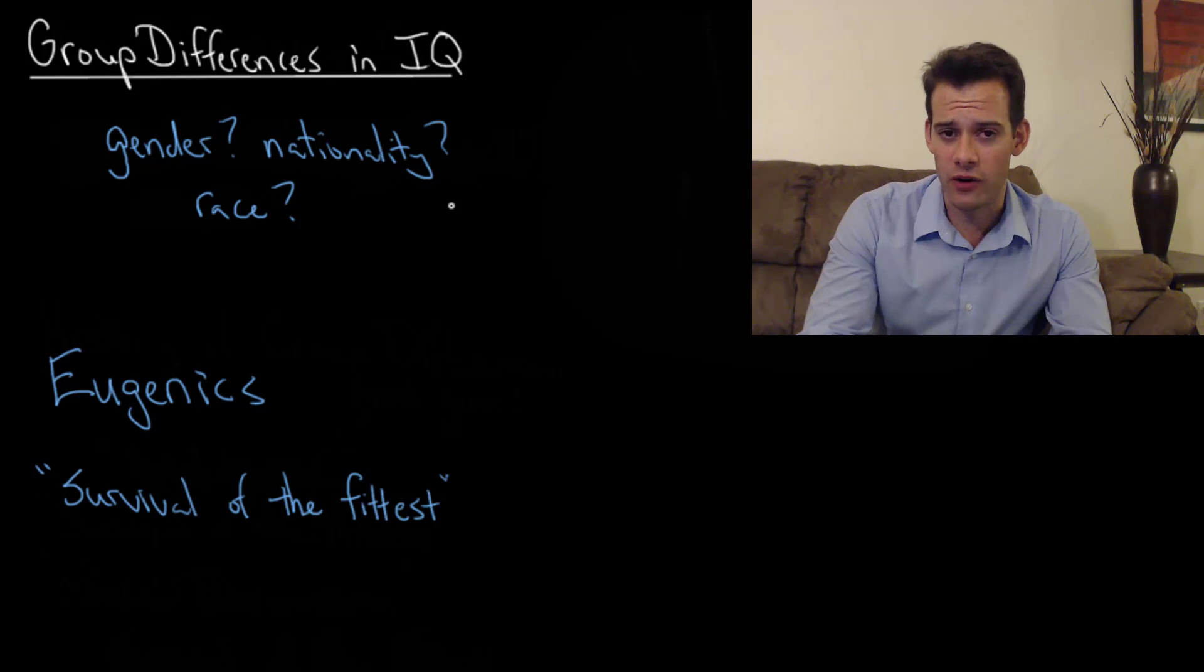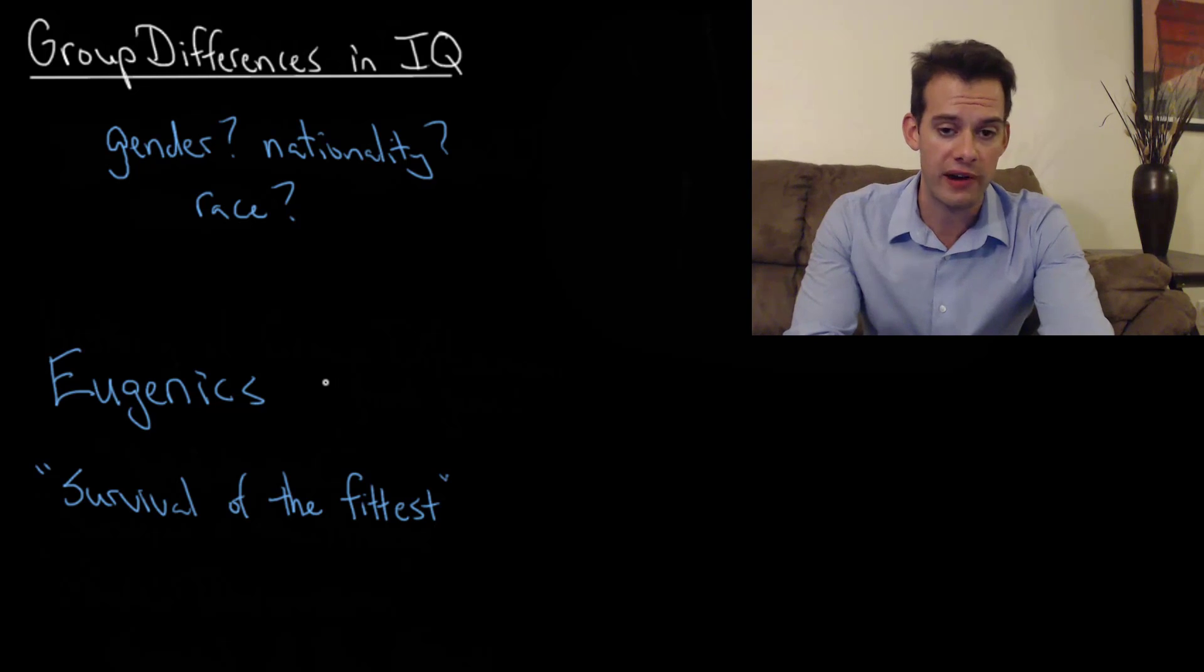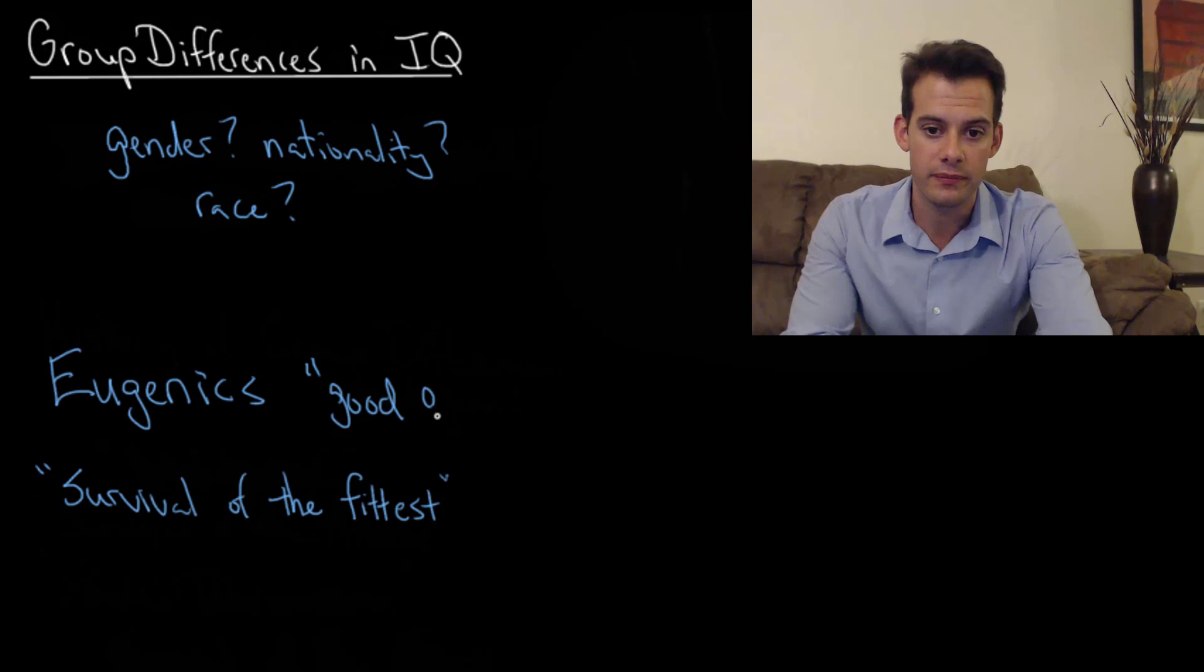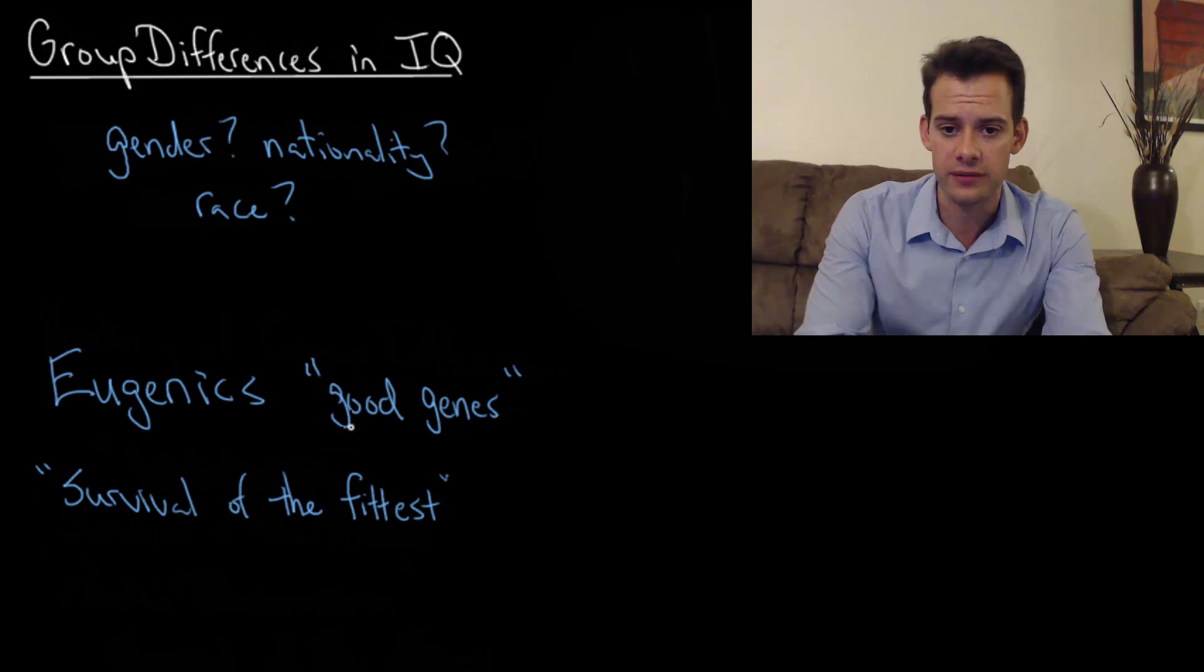This gets even more difficult because there's a controversial history, not a very pleasant one, when it comes to group differences in IQ. So this brings us to thinking about eugenics. Eugenics is a term that was coined by Sir Francis Galton and it refers to good genes. It's the Greek prefix eu for good and genic for genes, the idea that there are good genes. But eugenicists took this idea to mean that some people who have these good genes are inherently superior to other people who don't have these good genes, and that we should think about enhancing the reproduction of people with good genes and limiting the reproduction of people with inferior genes.